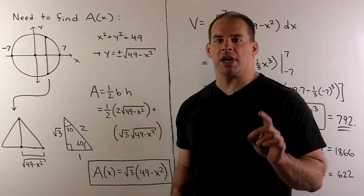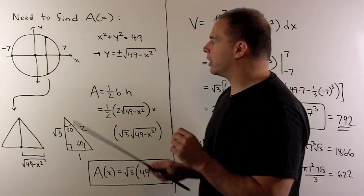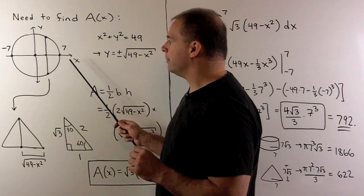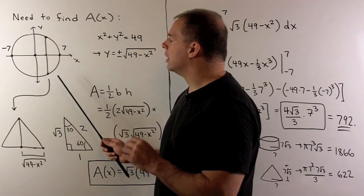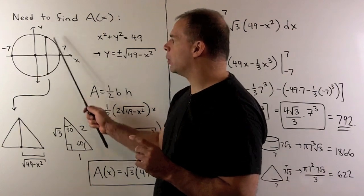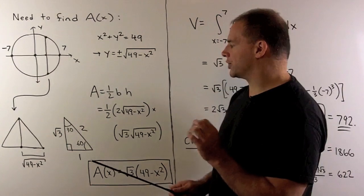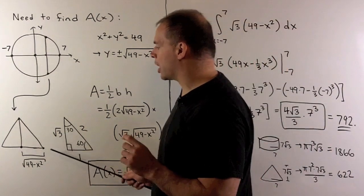So, how do we find the cross-sectional areas for our original solid? If we consider the base in the xy plane, so we have our circle, I'll draw in a segment perpendicular to the x-axis, whose endpoints are on our circle. That'll give us the base for one of our cross-sections. We have an equilateral triangle.